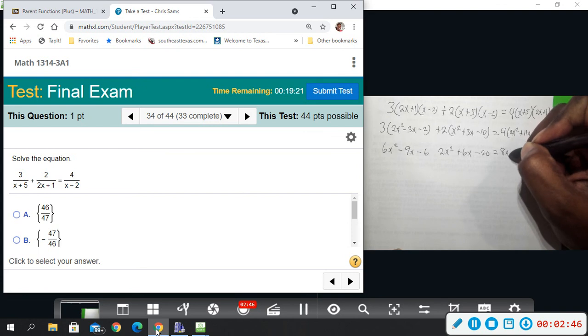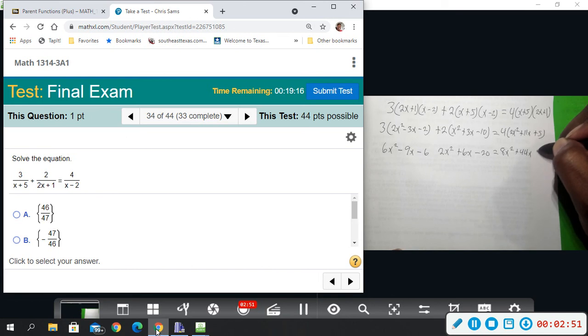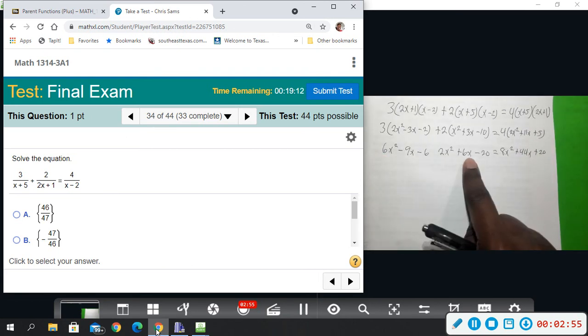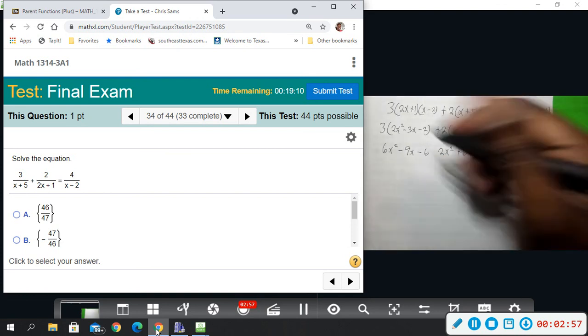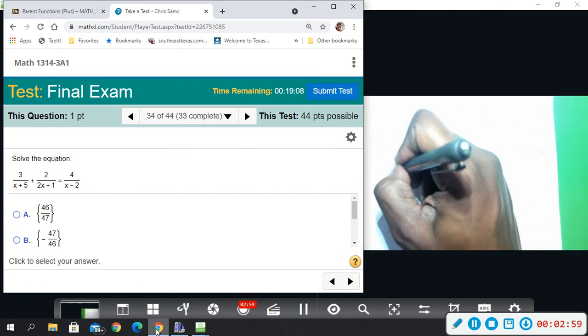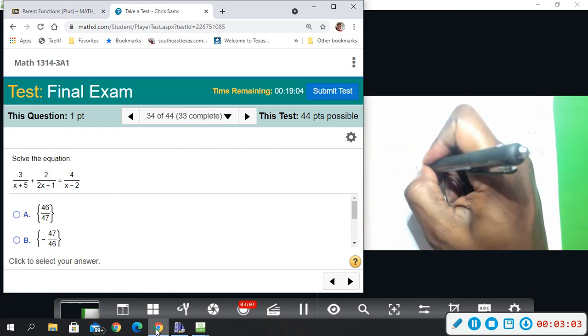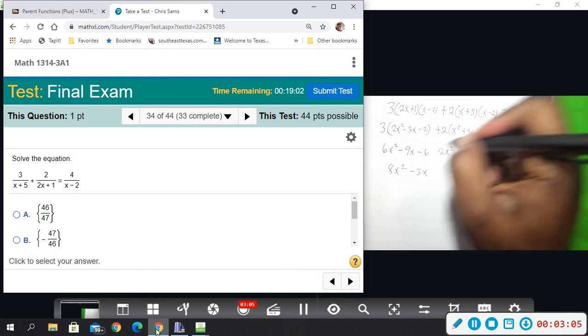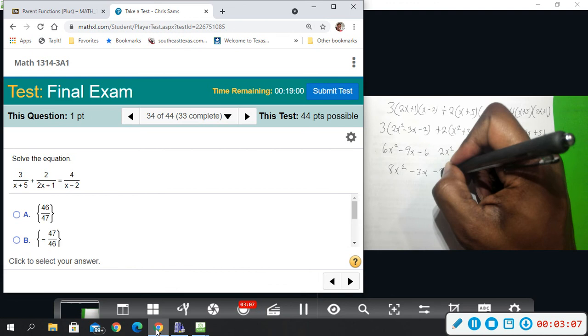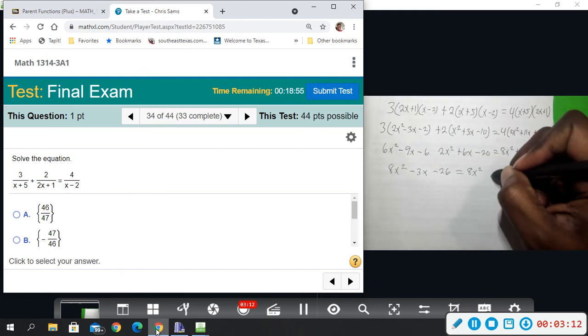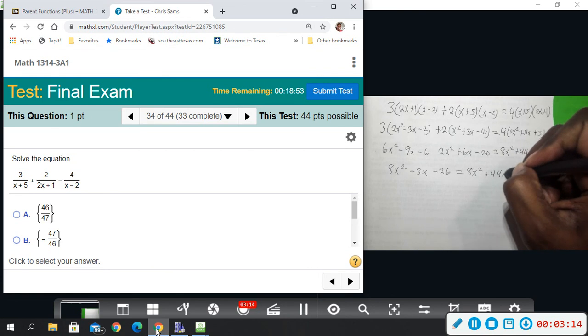8x squared equals 8x squared plus 4x plus 20. Combine like terms and that will give me 8x squared minus 3x minus 26 equals 8x squared plus 11x plus 5.